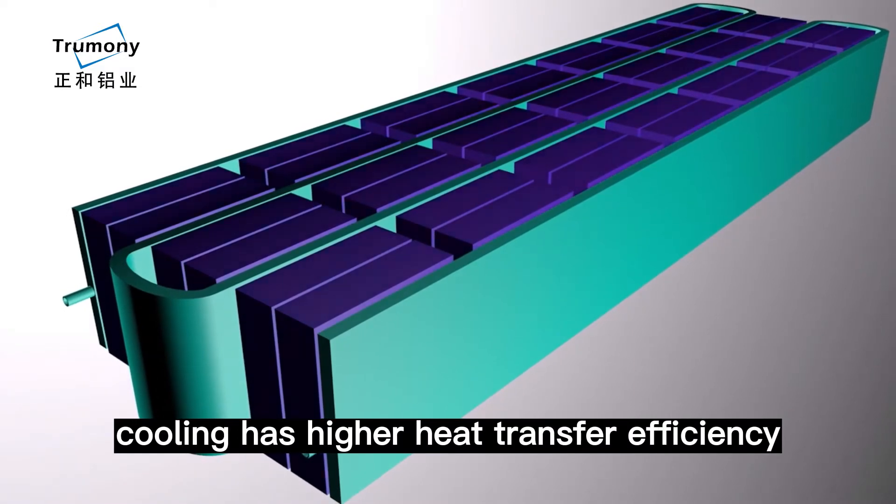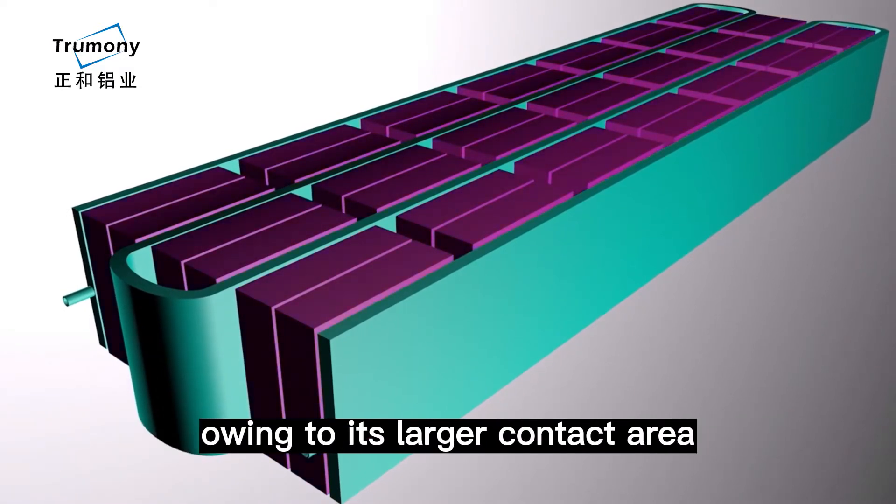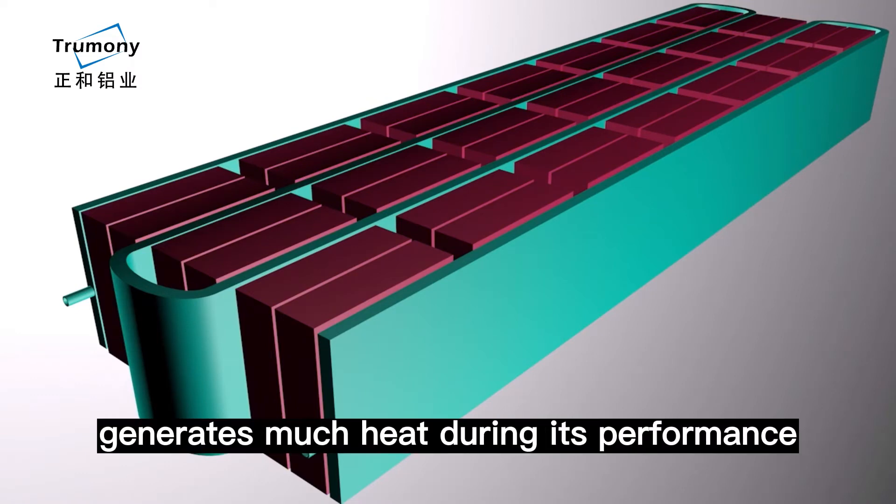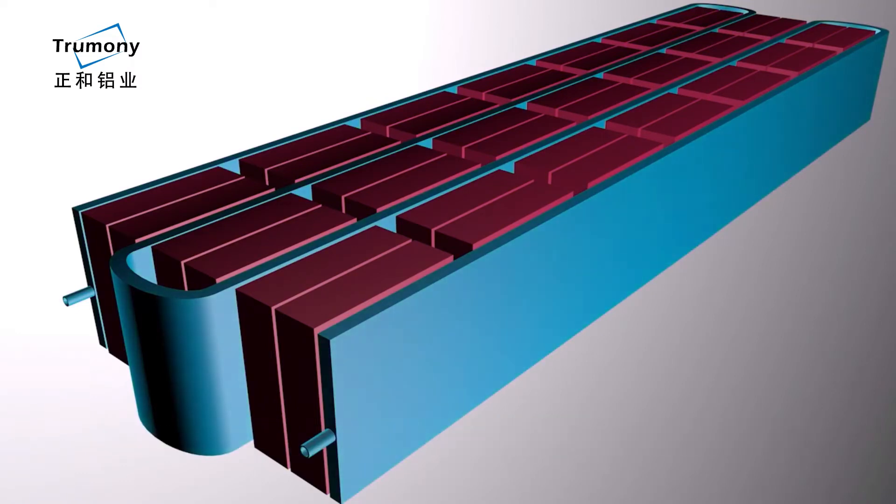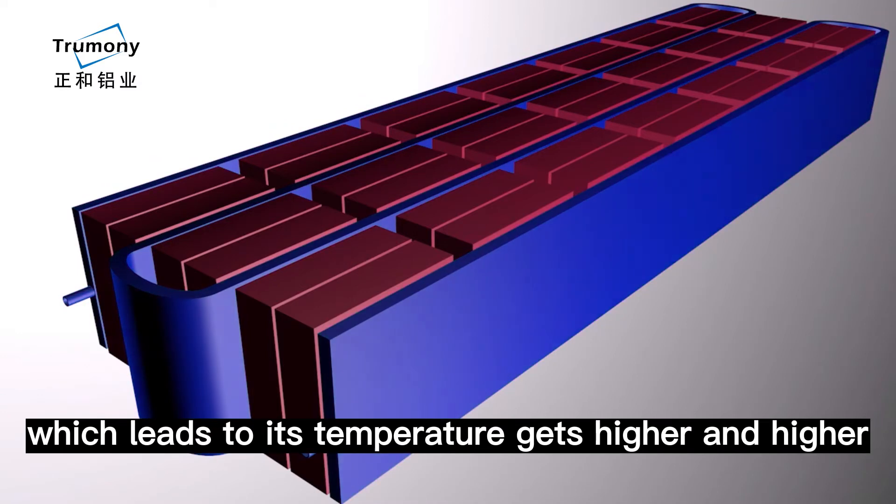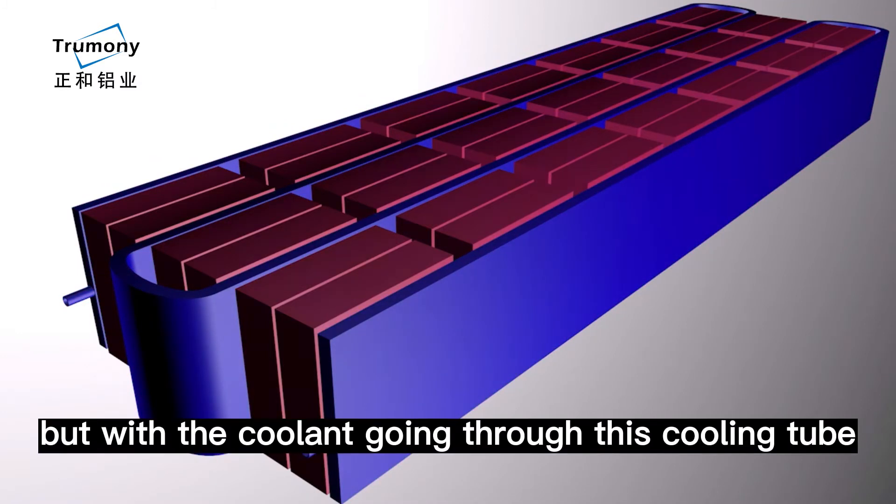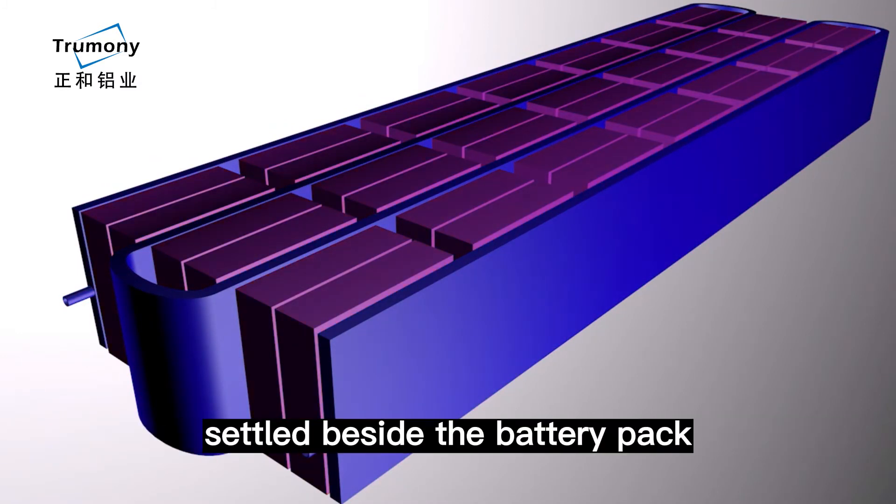heat transfer efficiency owing to its larger contact area. The battery usually generates much heat during its performance, which leads to its temperature getting higher and higher. But with the coolant going through this cooling tube settled beside the battery